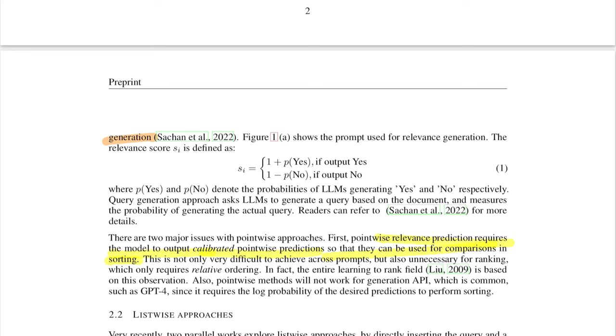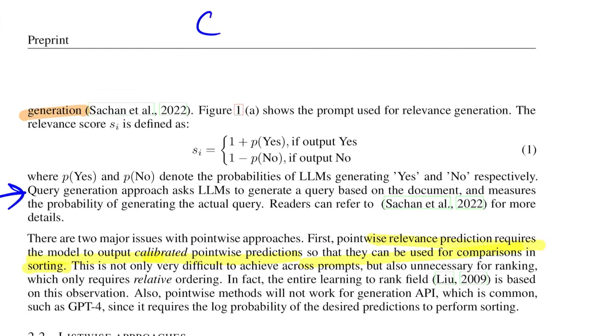One more approach that people use for pointwise generation generally is the query generation approach. The idea is you have a query Q, you have a document D. The first step is to regenerate a Q' from D that tries to answer the same thing that was expected out of Q. Once this Q' is generated, you somehow try to calibrate or calculate how good this Q' is to Q - how close this Q' is to Q.